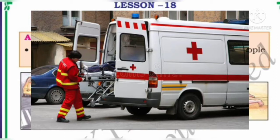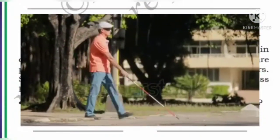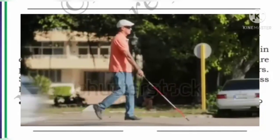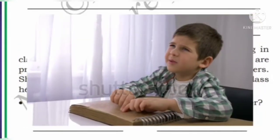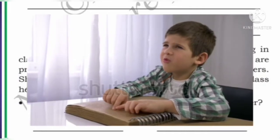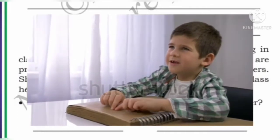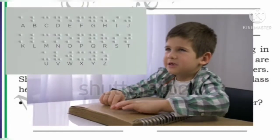We commonly come across blind people in our society. We see them working in various fields and some are well educated. Have you ever thought how they can read and write without eyesight? These people have special letters called Braille script.